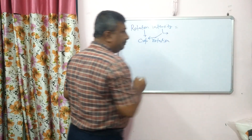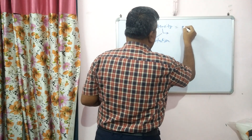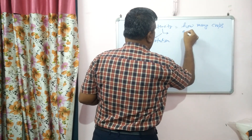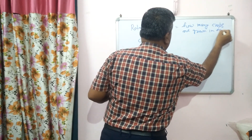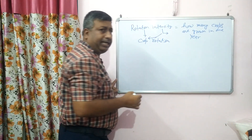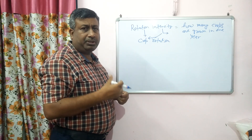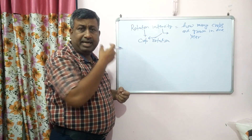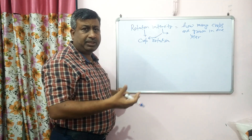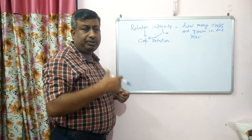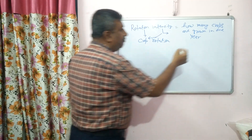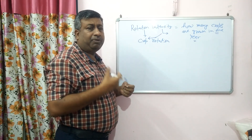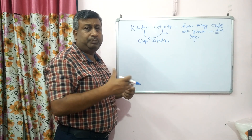Rotation intensity gives information about how many crops are grown — how frequently, how many crops are grown in one year. Most crop rotations are of one year, like rice-wheat or maize-mustard, but some rotations are of two years, like rice-wheat then maize-mustard. Sugarcane-based rotations are also two-year rotations. Most of the rotations are of one year.